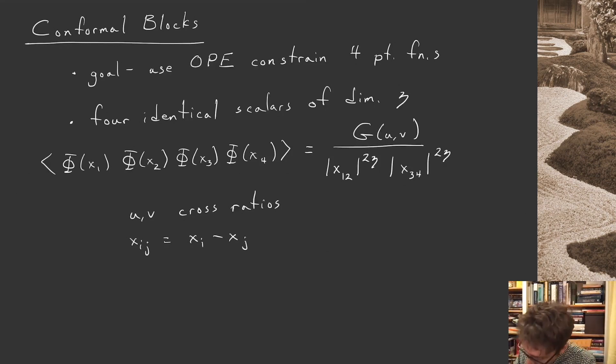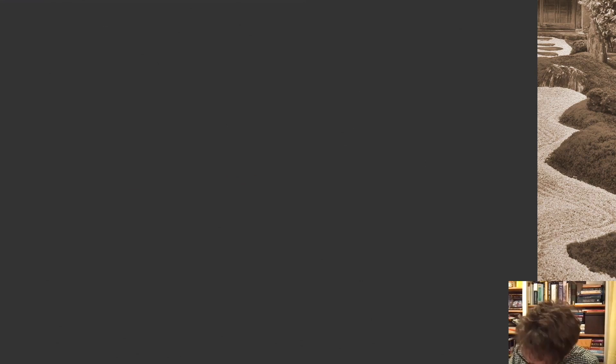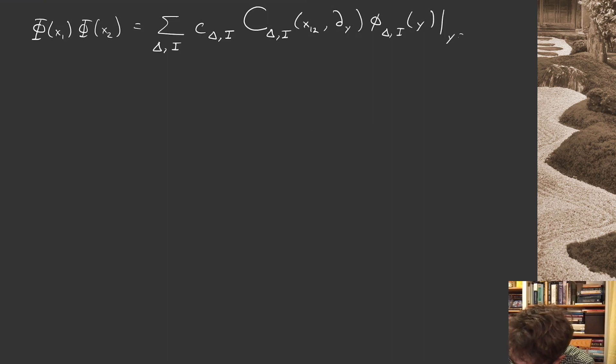Now what I want to do is take x1 close to x2 and x3 close to x4 and use this notion of an operator product expansion. So we're going to pair off the operators in this particular way and use the OPE. When I take phi of x1 close to phi of x2, I can write this as a sum over primaries. I'm going to have to include spin here, not just scalar operators. C delta i and then a capital C delta i, x12 partial y, phi delta i of y evaluated at y equals x2.